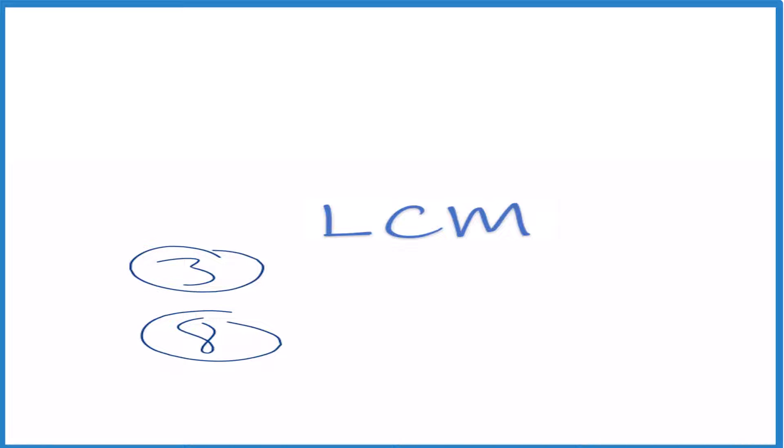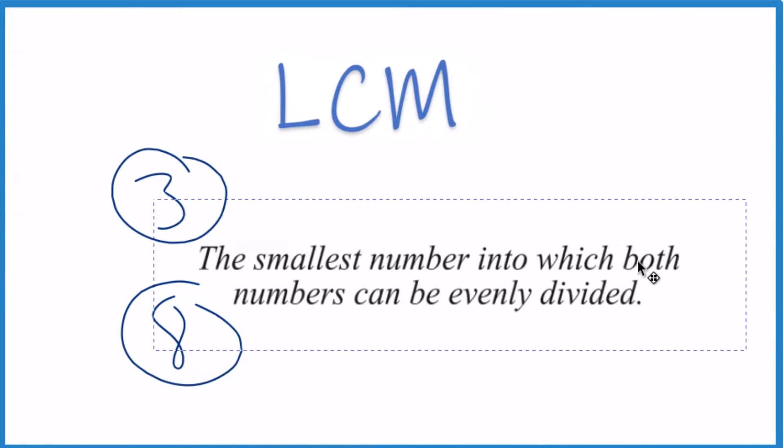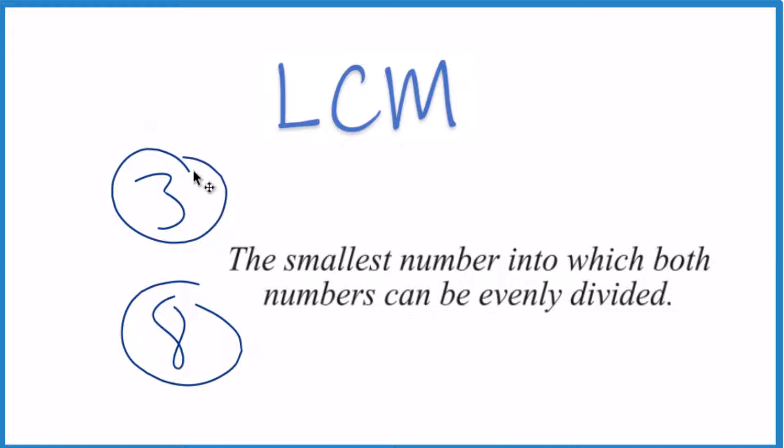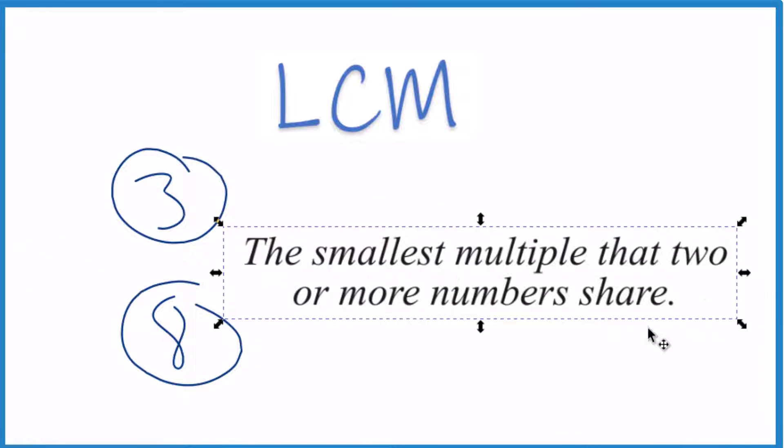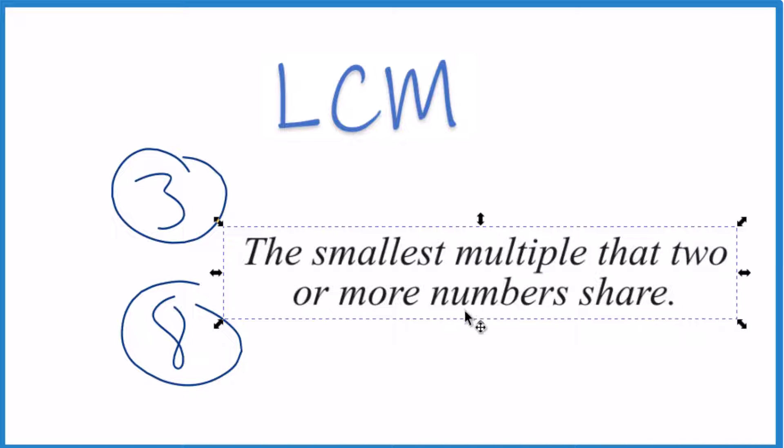So when we're talking about the least common multiple, what we mean is the smallest number that can be divided into both of these numbers evenly. You could also think of it as the smallest multiple that these two numbers share. So that's the LCM.